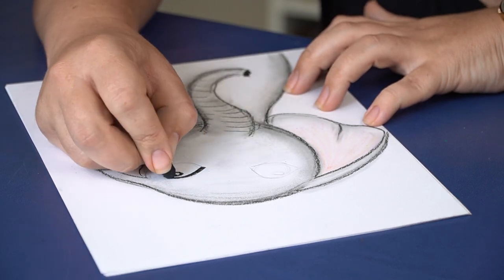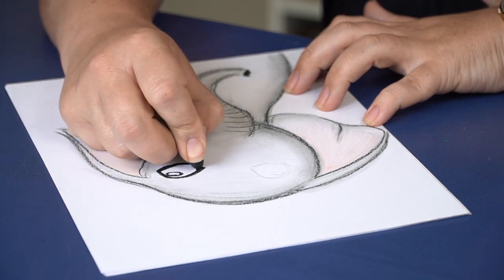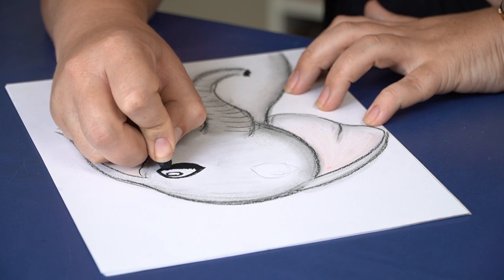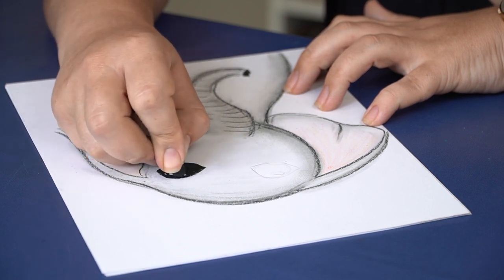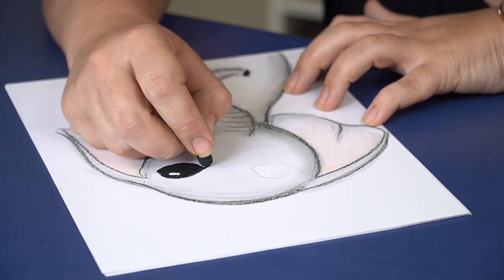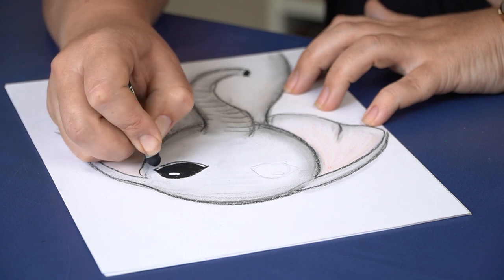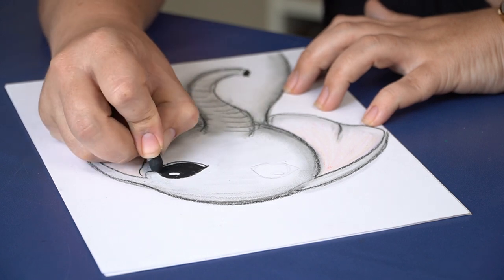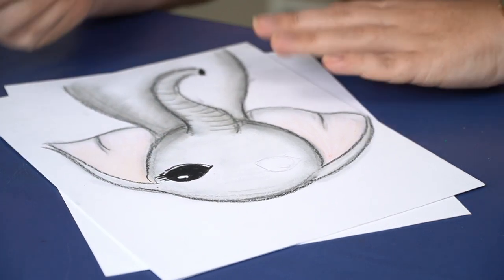Then we can go over our eye. Nice clean line for this. Press really hard when you color in. You can add that little line at the bottom. Definitely a few eyelashes for an elephant.